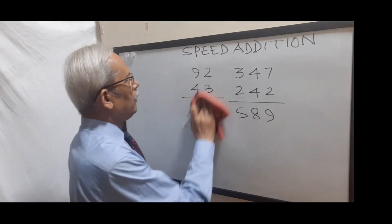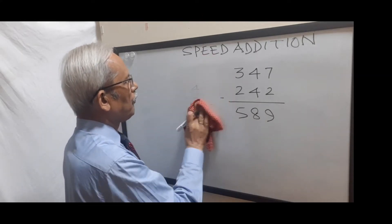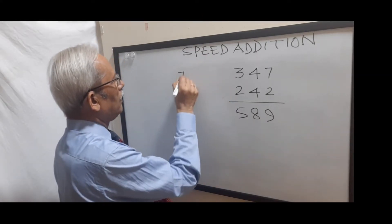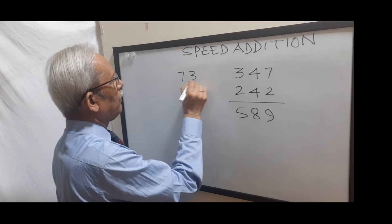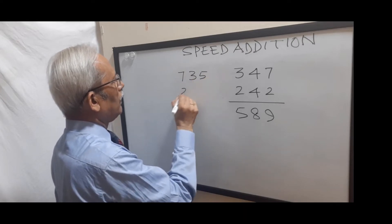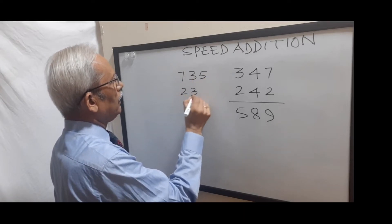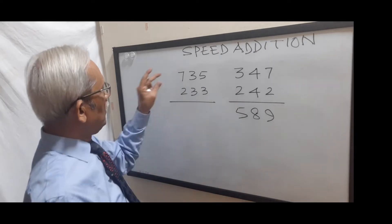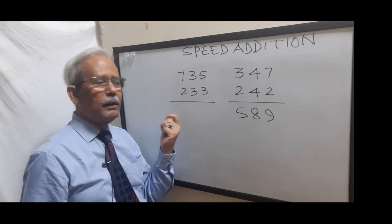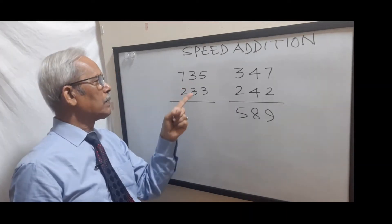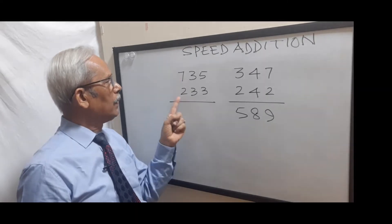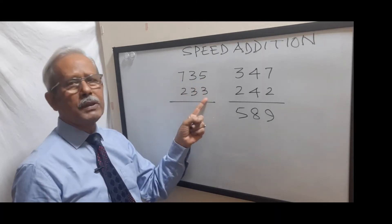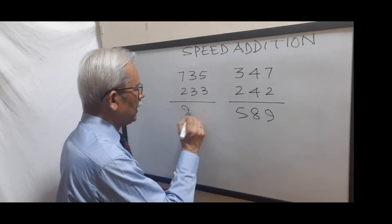Another example: 735 plus 233. 700 plus 200 is 900, 30 plus 30 is 60 — so 960 — plus 5 plus 3 is 8 — so 968.